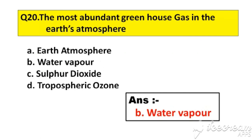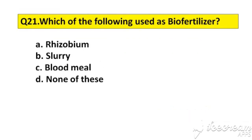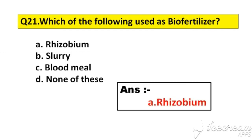Question number 21. Which of the following is used as biofertilizer? Option A: Rhizobium. B: Slurry. C: Blood meal. D: None of these. The right answer is option A, Rhizobium.